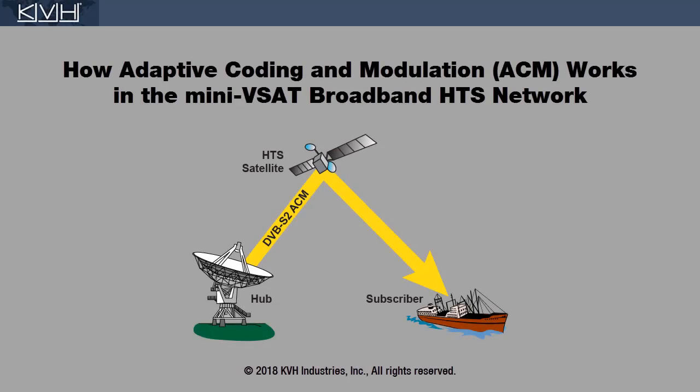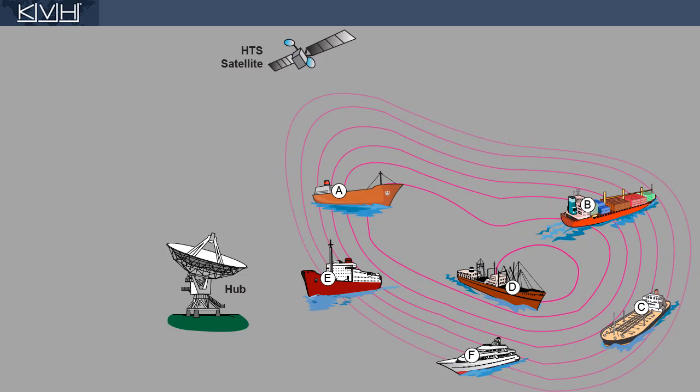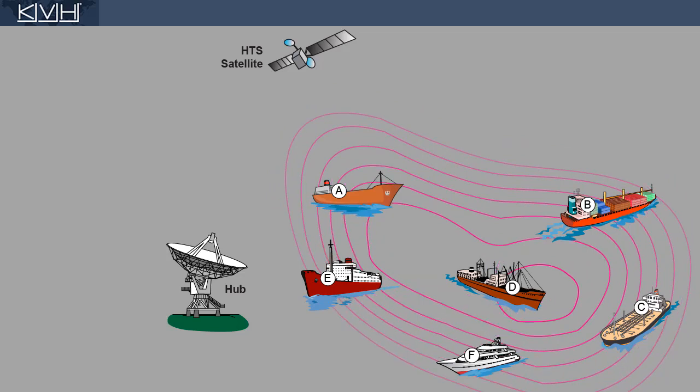This video explains how adaptive coding and modulation on the forward link maximizes the efficiency of the HTS network. Within the coverage area of the satellite beam, vessels will experience different link conditions that affect the signal strength, also referred to as signal-to-noise ratio.